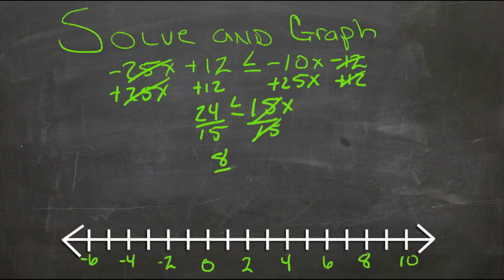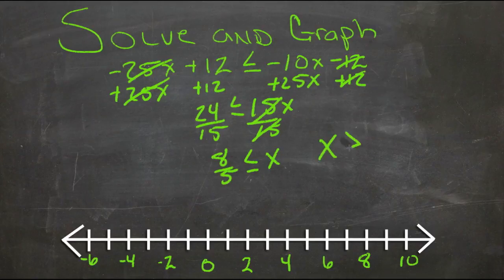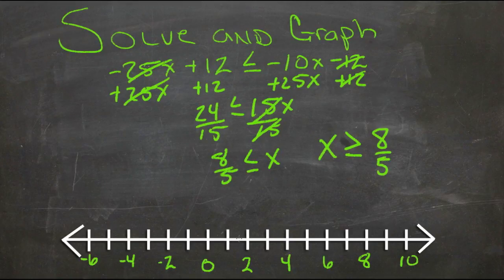And we'll have 8 fifths is less than or equal to x, which could also be written as x is greater than or equal to 8 fifths. So 8 fifths is 1 and 3 fifths, so a little less than 2.